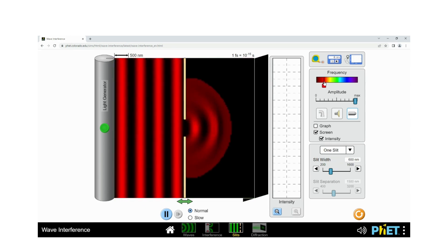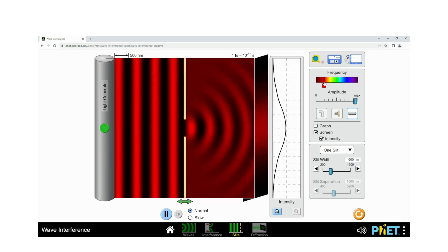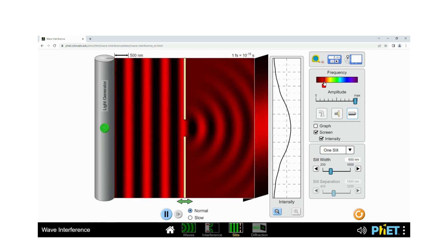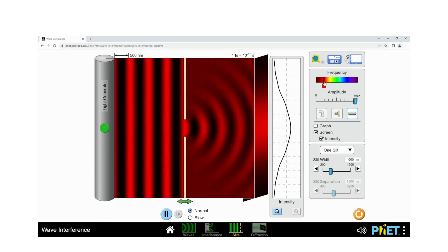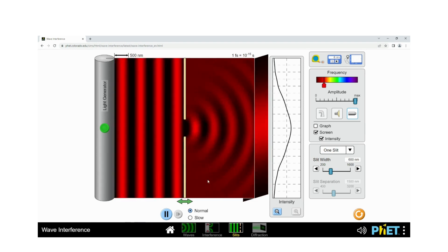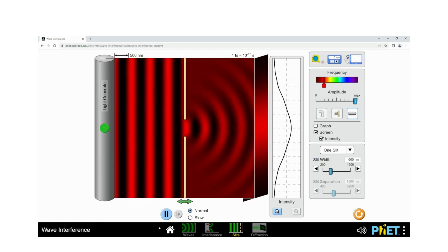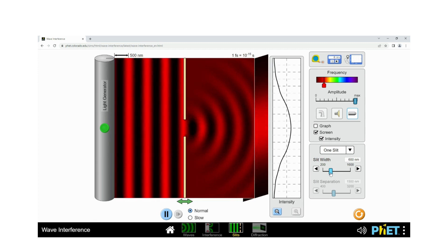The diffracted photons then form an interference pattern of bright and dark stripes on the screen. This pattern is caused by the constructive and destructive interference of the light waves as they pass through the slit. This interference pattern is a good illustration of the wave-like nature of light.